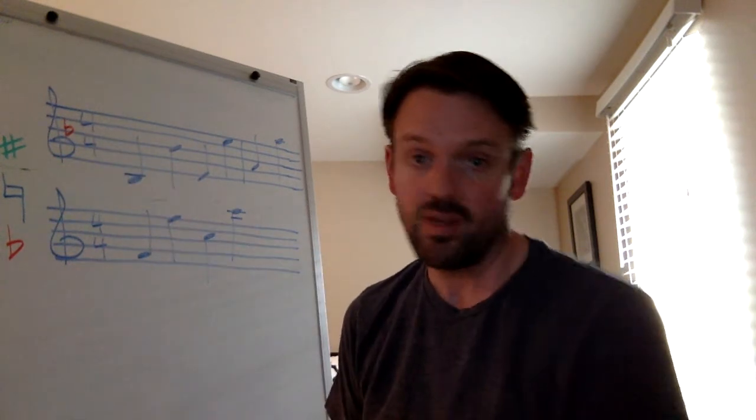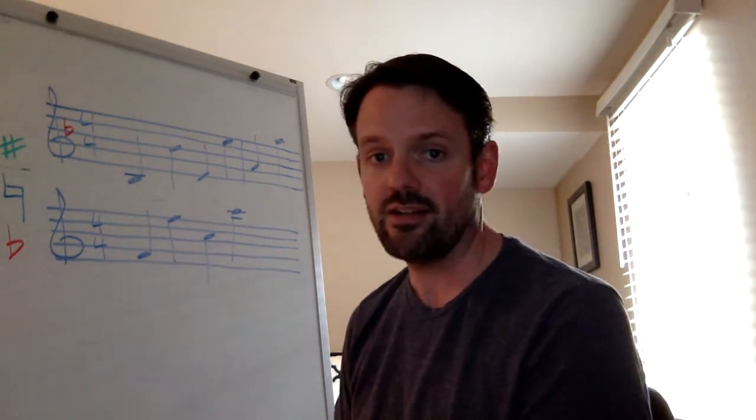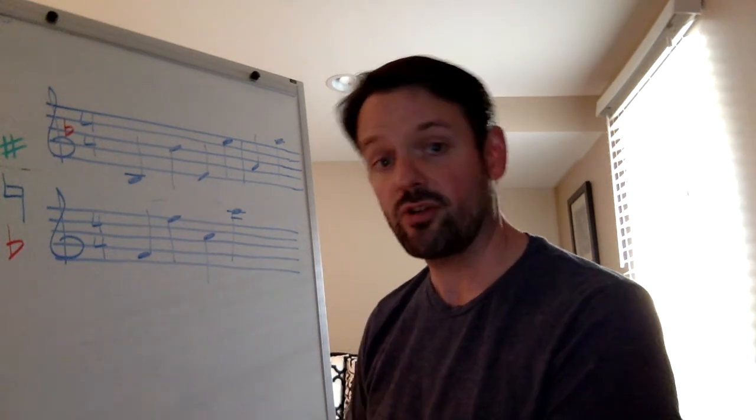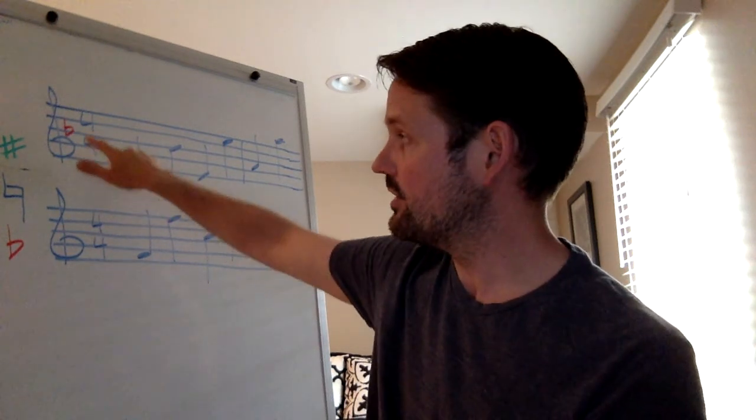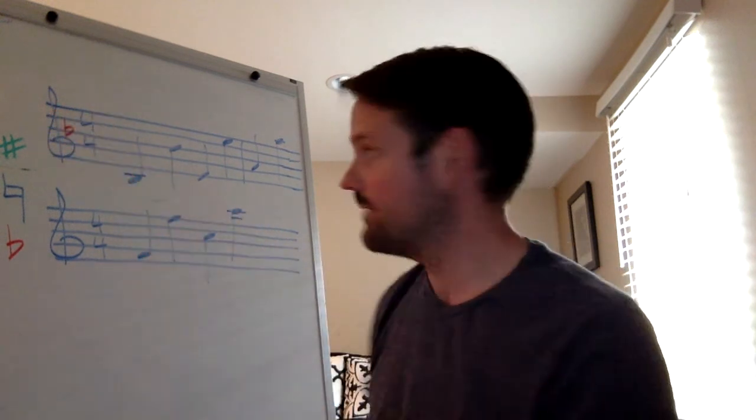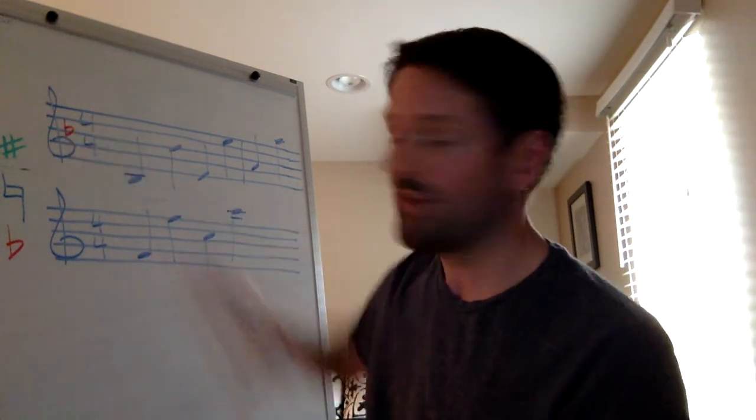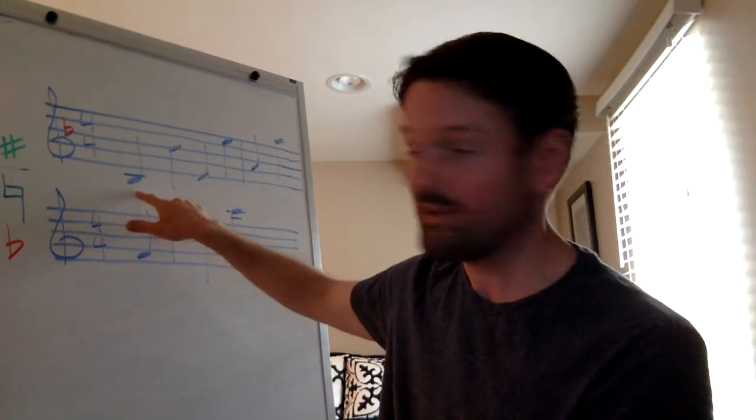The other way to remember is if you look at what line the note is on, that line tells you whatever note goes on that line, that's what's flat. So every good boy, it's on the B line. So that means that B's are flat. So when you have a flat sign there, that transforms this into a B flat. So you play it B flat.